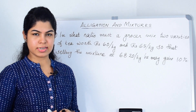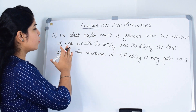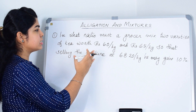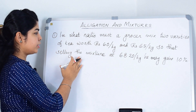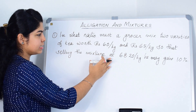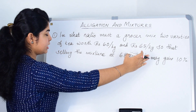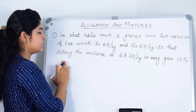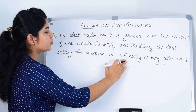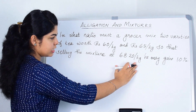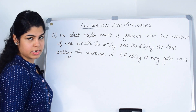Now let us solve our first question. The question is: in what ratio must a grocer mix two varieties of tea worth Rs. 60 per kg and Rs. 65 per kg, so that by selling the mixture at Rs. 68.20 per kg he may gain 10%?